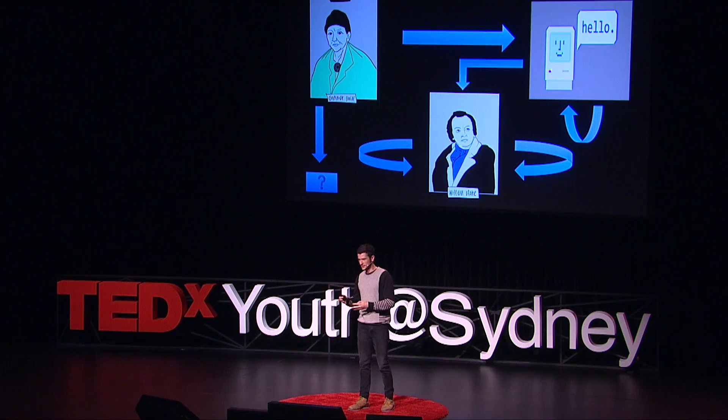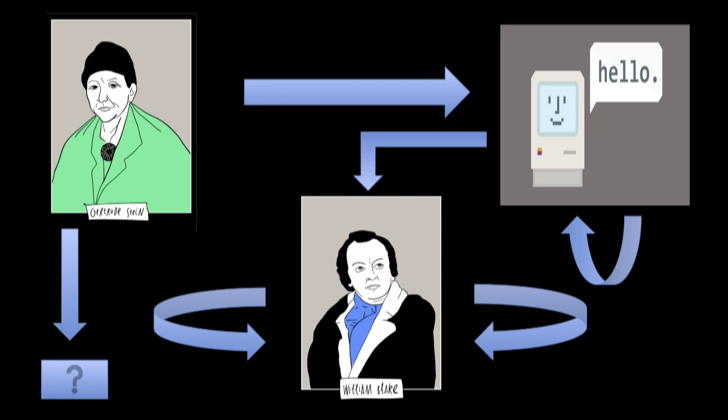So what we've done here is more or less a reverse Turing test. Gertrude Stein, who's a human, is able to write a poem that fools the majority of human judges into thinking it was written by a computer. Therefore, according to the logic of the reverse Turing test, Gertrude Stein is a computer. Feeling confused? So far we've had humans that write like humans, computers that write like computers, computers that write like humans, but also — perhaps most confusingly — humans that write like computers.